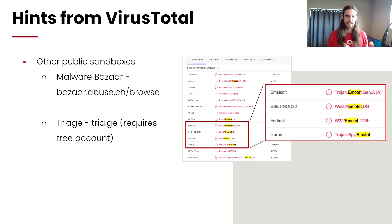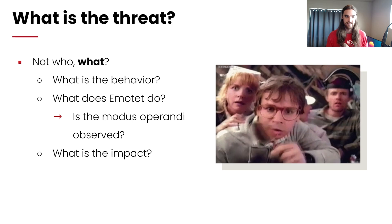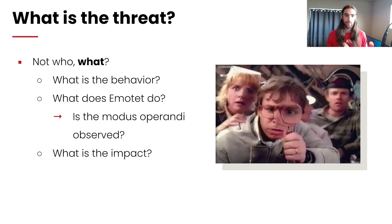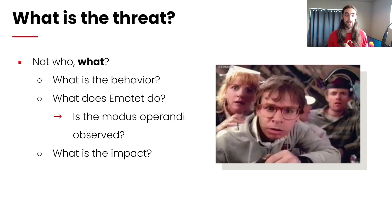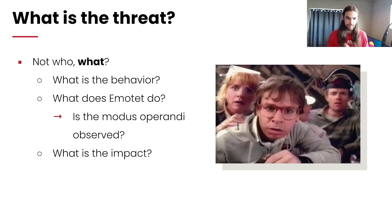We can also look at other places such as Malware Bazaar or Triage to search those file hashes and get additional confirmation. So, it's Emotet — that's our threat. Now we've determined who the threat is, but we don't really know what the threat does. We don't know what Emotet's behavior is, what it's going to do, or what impact it could have on our devices. We need to determine the impact of Emotet.